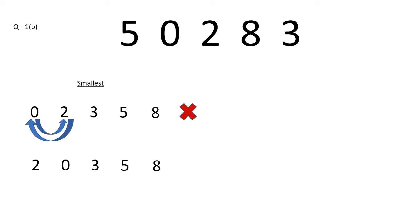Now let's move on to the largest number. The concept is we have to pick the largest digit first. The largest digit given is 8, then 5, then 3, then 2, then 0. This is totally correct. So the largest number formed is 85,320.